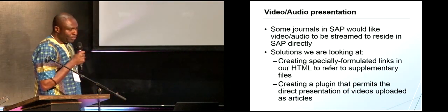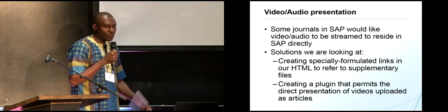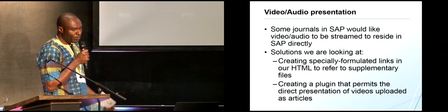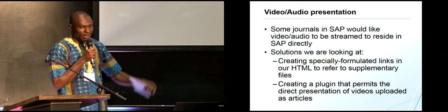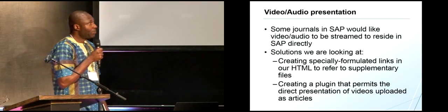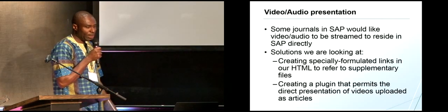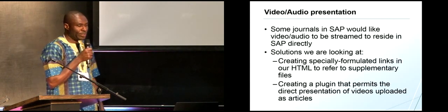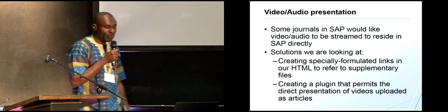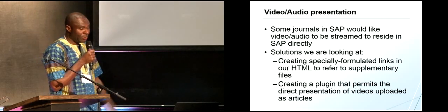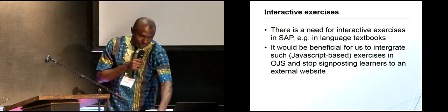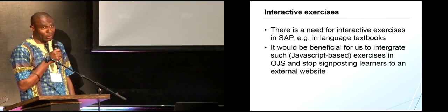We have journals that would like to upload videos and have them streamed and residing in our journal system. Today we have all these videos on another platform, but we want them to reside in our OJS. We have started creating special formulated links in our HTML to refer to these supplementary files. We are also planning — and have started — creating a plugin that permits direct presentation of videos uploaded as an article. We are moving to OJS 3 and will do the same job there. If any of you have already done this, please give me a tip.